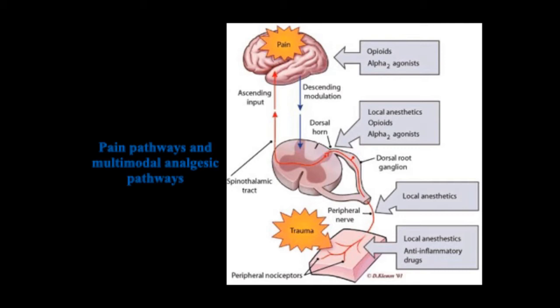Different analgesics exert their analgesic effect on different locations of the pain pathway. For instance, anti-inflammatory drugs exert their effects at the tissue level, while local anesthetics exert their effects at the tissue level, also at the peripheral nerves and on the dorsal horn. Opioids and alpha-2 agonists block the pain pathway at the dorsal horn and also centrally at the brain level.